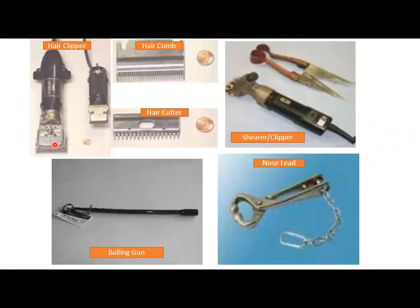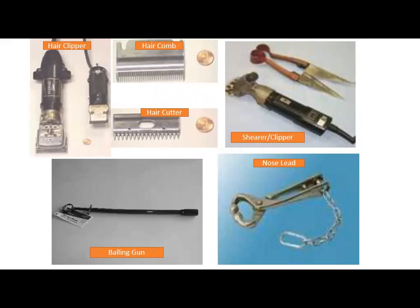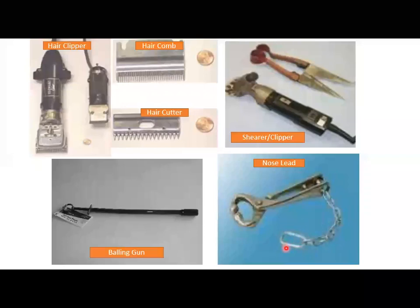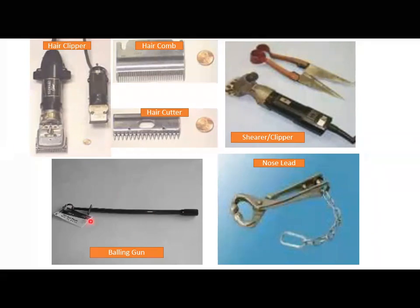This one is a nose lead, used to control the animal from its nose. Sometimes animals get aggressive, so this is the tool for leading cattle, especially bulls. It is inserted into each nostril and a lead rope is attached to the chain. When the rope is pulled, more pressure is exerted on the nose, and the animal gets restrained and controlled by the handler.